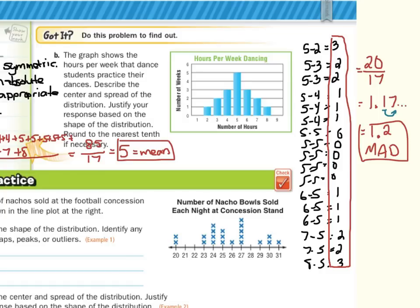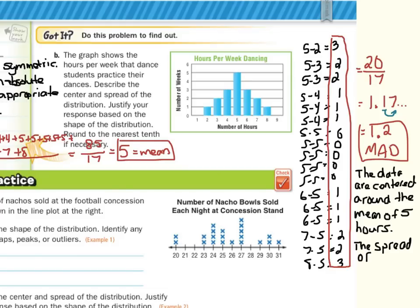So to finish our summary here, we're going to say the data are centered around the mean of five hours. And then for mean absolute deviation, we can say that the spread of the data around the center is about our answer of one and two tenths hours.